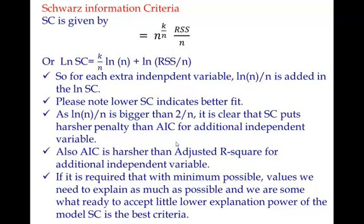If it really adds a little more value, then you may go for AIC. So in a nutshell, if your requirement is to go for as few variables as possible, even if you are ready to compromise a bit on explanation power of the model, Schwarz criteria is the best. However, if you want a little more explanation power and you are ready to compromise with one or two extra variables, you may think of going for AIC. Thank you.